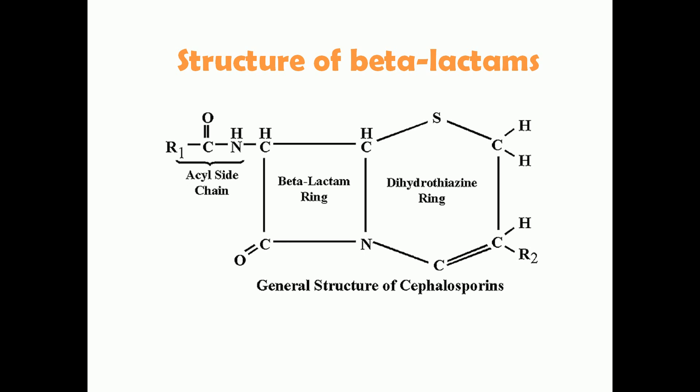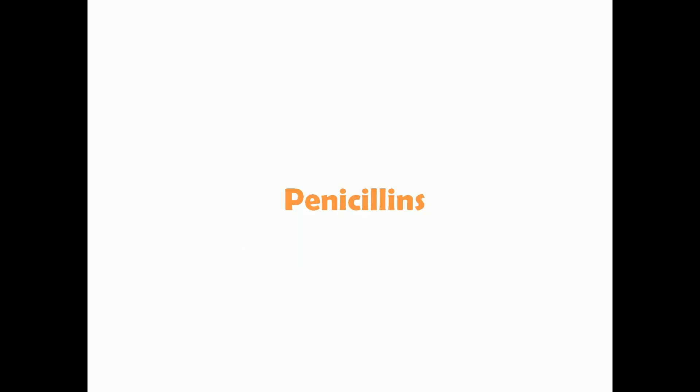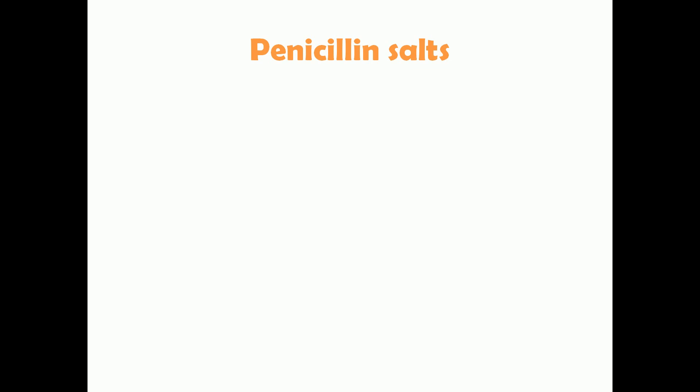The common thing between all these antibiotics is that they all have a beta-lactam ring in their structure. This picture shows the structure of cephalosporins, a member of the beta-lactams. As you can see, in the center there is a beta-lactam ring, which is common in all beta-lactam antibiotics. What varies are the side chains attached to the beta-lactam ring, giving each their unique characteristics and properties.